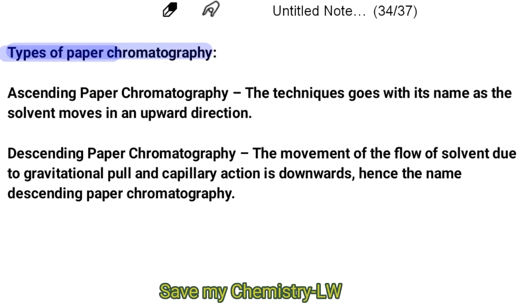Some types of paper chromatography: Number one is ascending paper chromatography. This technique goes with its name as the solvent moves in an upward direction.